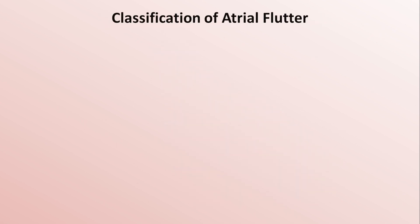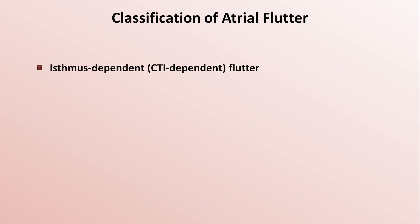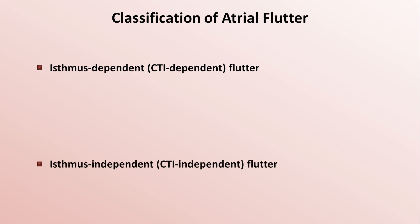Now let's talk about the classification of atrial flutter. I'm not talking about flutter with fixed block versus variable block, or 4-to-1 versus 2-to-1 flutter. While those are important distinctions, it's not how a cardiologist thinks about flutter. Cardiologists categorize flutters as being either isthmus-dependent — meaning the flutter circuit passes through the cava tricuspid isthmus — or isthmus-independent.